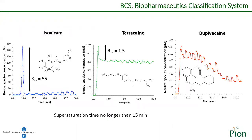These drugs show a typical neutral species concentration profile for a crystalline form, supersaturating for only a short period of time. Isoxicam is the compound that supersaturates most highly, reaching a concentration almost six-fold greater than its intrinsic solubility. On the contrary, tetracaine hardly supersaturates and the supersaturation ratio is close to one. Bupivacaine shows different behavior: it begins to precipitate as an amorphous form but over time this form is transformed into a more stable one. In all compounds studied, the supersaturation time is no longer than 15 minutes, so these examples will be suitable for demonstrating the value of increasing supersaturation duration.